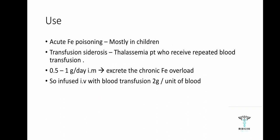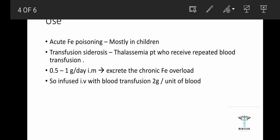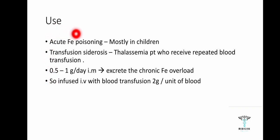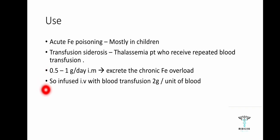The uses of desferoxamine are for acute iron poisoning and transfusion siderosis. Transfusion siderosis occurs in thalassemia patients who receive frequent blood transfusions, causing iron overload in the body. We can give 0.5 to 1 gram per day intramuscularly to correct the iron overload.